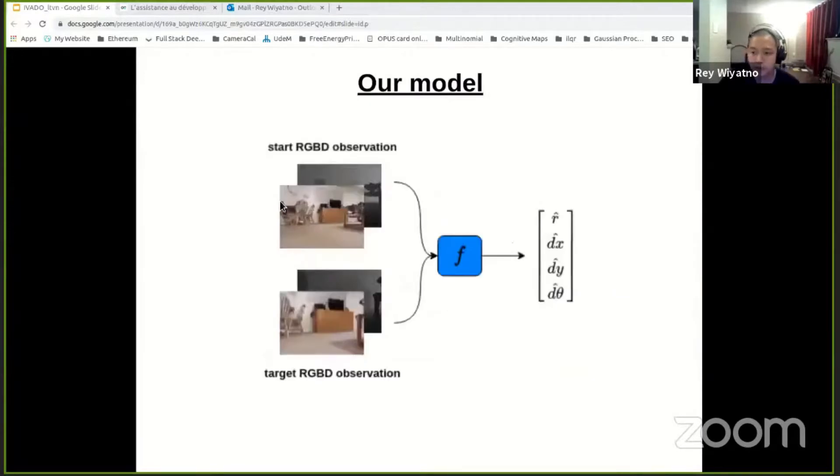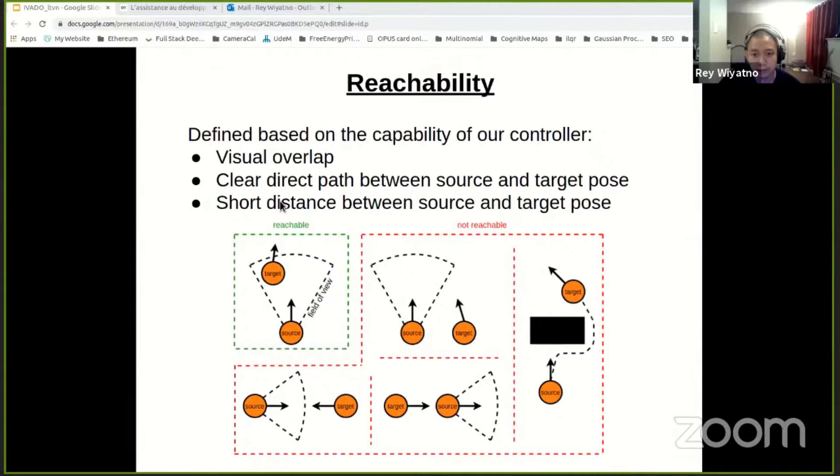To achieve all this, we train a single neural network model that predicts if a target image is reachable, which I will define in a second from the start image, and the relative pose transformation between them. So what do I mean by reachability?